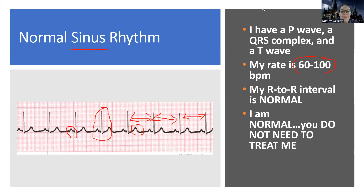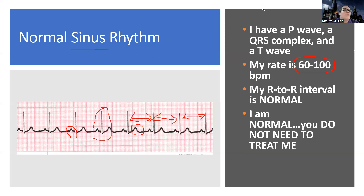So that is normal — the completely normal rhythm. The next one we're going to go over is sinus bradycardia, when things get a little slow. We'll go to that one next. See you there.